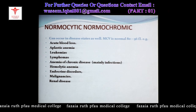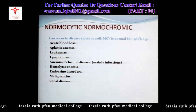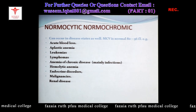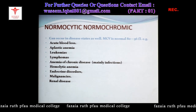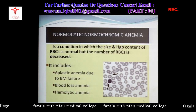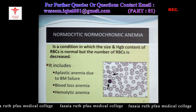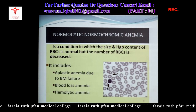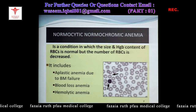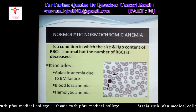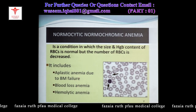Normocytic means the size of RBCs in a stained preparation is equal to or slightly less than a small lymphocyte. Normochromic means the hemoglobinization within the RBC is normal — the central area of pallor in a stained film is one-third or less than one-third of the cell diameter. If hemoglobin is less, the staining area will be less and the pallor area will be increased. Three important causes are aplastic anemia, blood loss anemia, and hemolytic anemia.